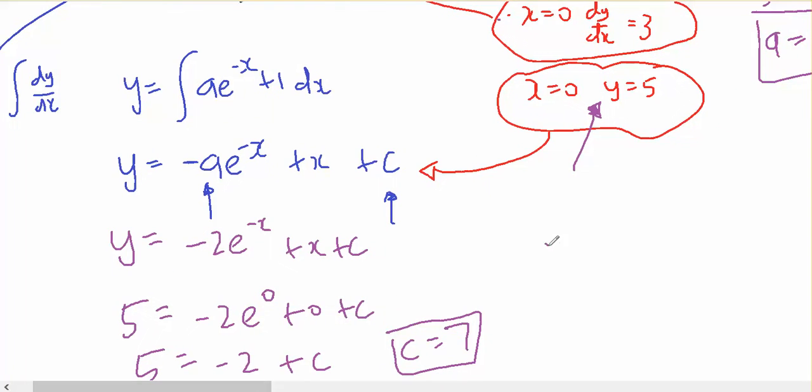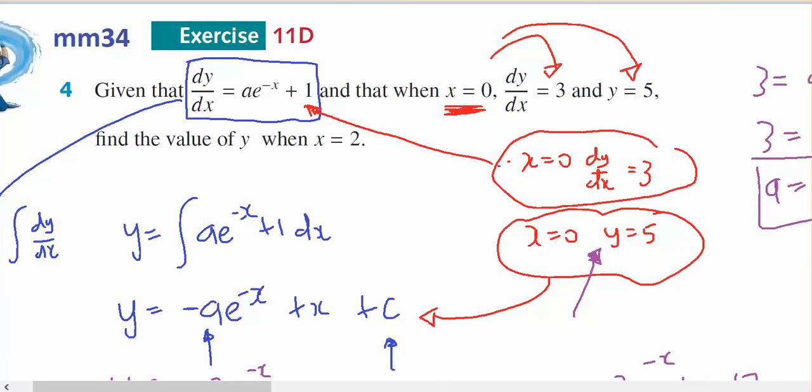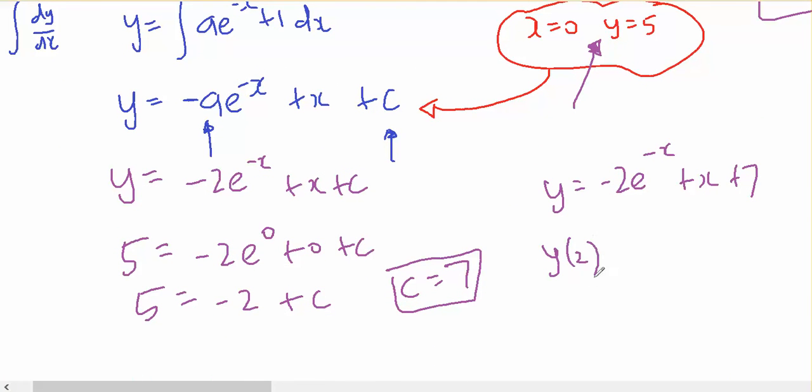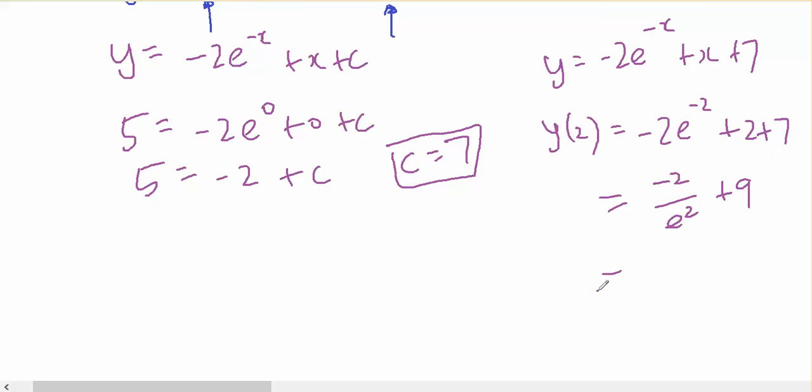So now I know that y equals minus 2 e to the minus x plus x plus 7. And the question asks me, find the value of y when x equals 2. Well, y of 2 will be minus 2 e to the minus 2 plus 2 plus 7 is going to be minus 2 on e squared plus 9. So y equals 9 minus 2 on e squared when x equals 2.